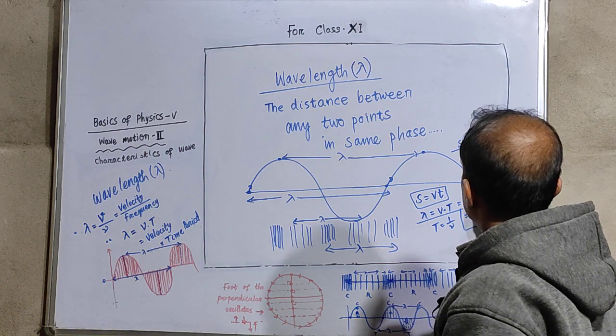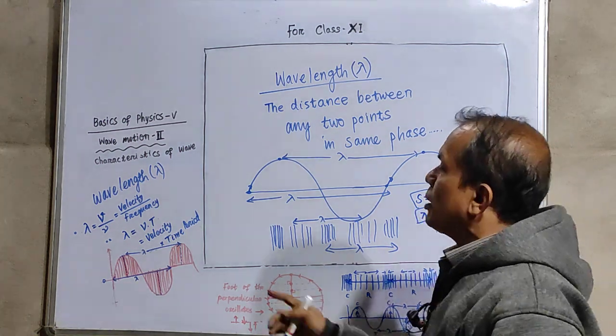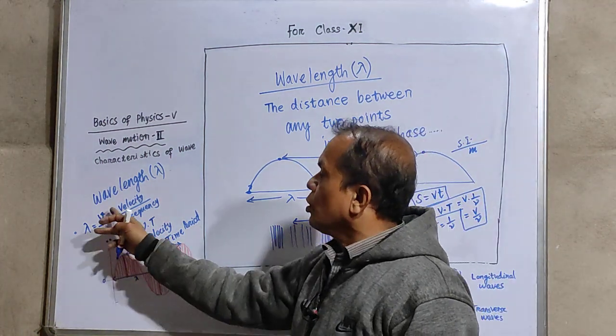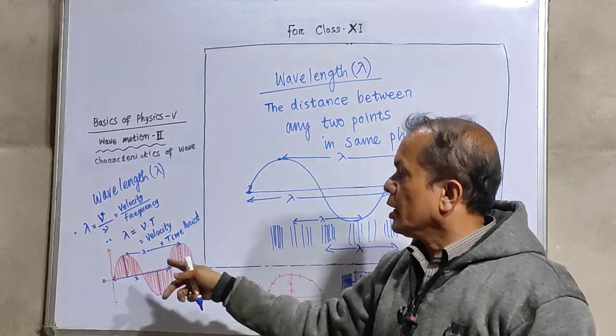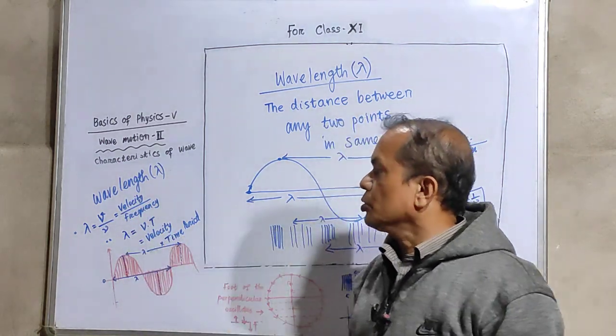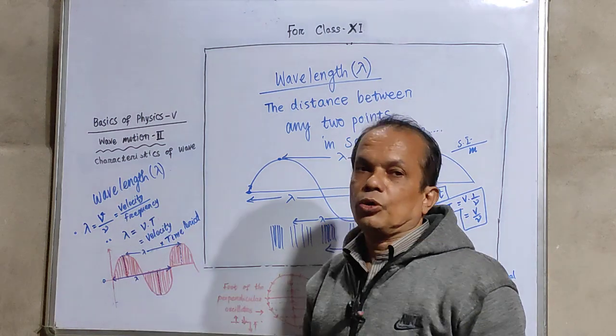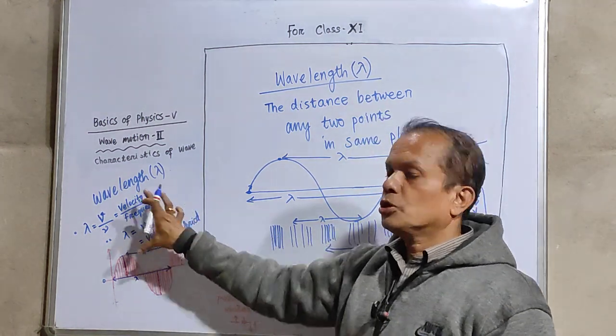So v by nu is also lambda. We have lambda having two formulae. One is velocity upon frequency, another is velocity into time period. Both ways, velocity is common. This is something you must note down.